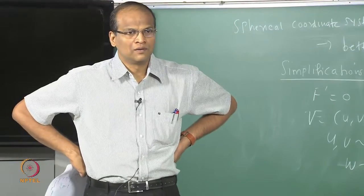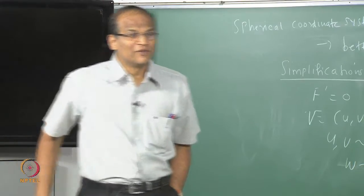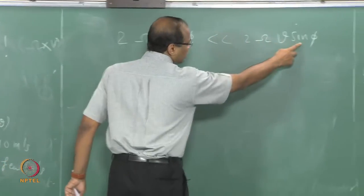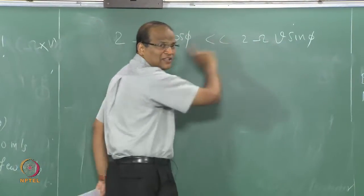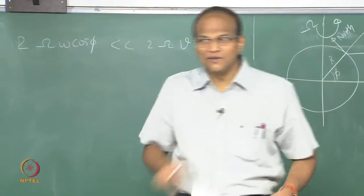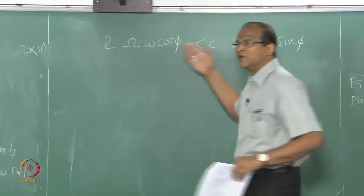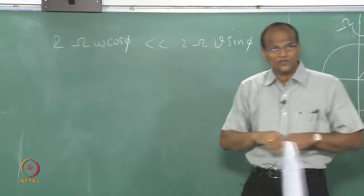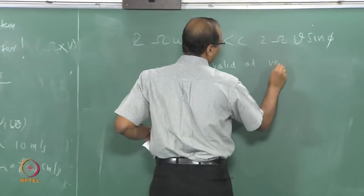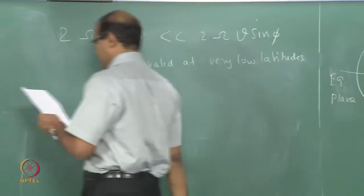But when will this fail? When the phi is very small, when the phi is very small, cos is very high, sin is very low. Therefore, though the W is much, much less than V, the terms will become comparable. So near the equator, this will fail because that phi is with respect to the equator. So strictly, are you getting the point? So this cos will become very close to 1, this will close to 0. So not valid near the equator, regardless of the system. So let us keep it, let us remember this.